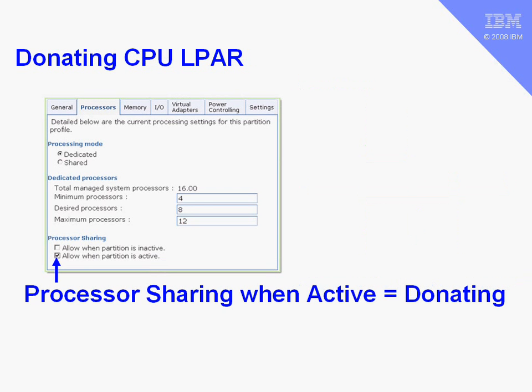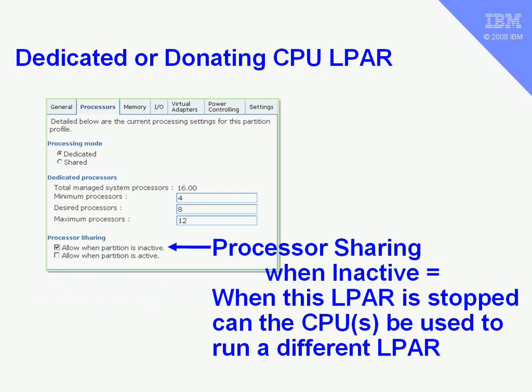Down at the bottom here, this button — 'allow when partition is active, this process is sharing' — is how we switch on the donating feature for a dedicated logical partition. The other button is if we want to allow sharing of our CPUs when the partition is inactive. When we stop a logical partition, we can earmark the CPUs it was using for its sole use so nobody else can go and grab those particular CPUs.